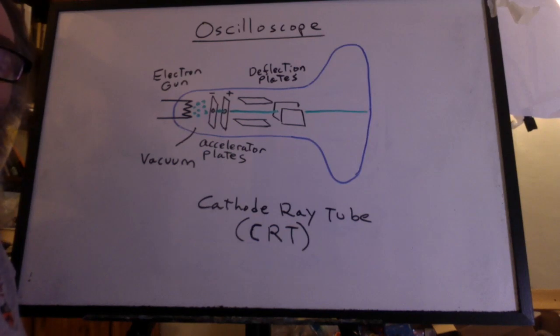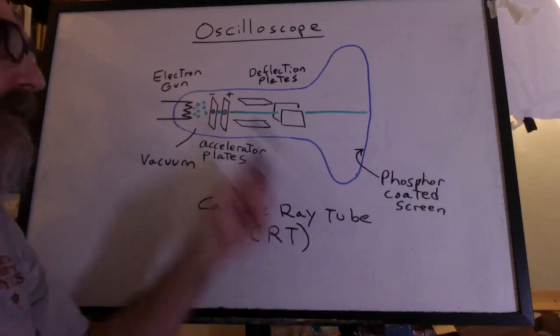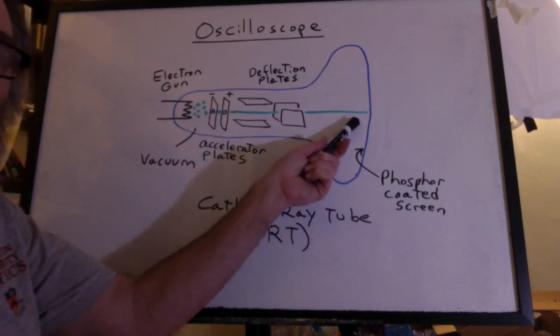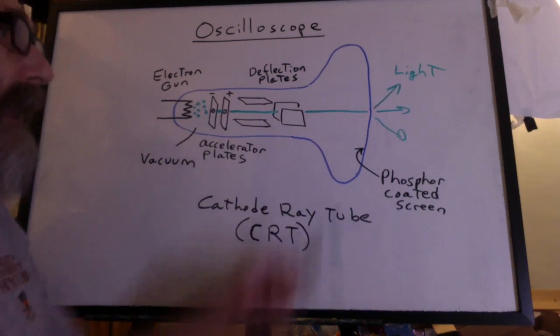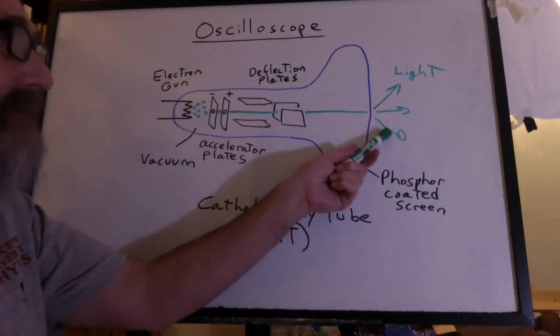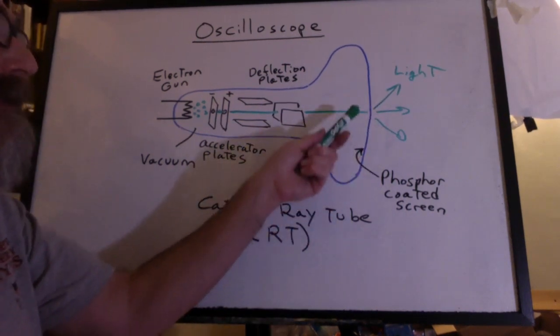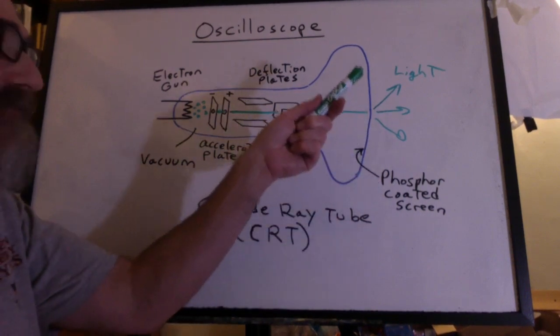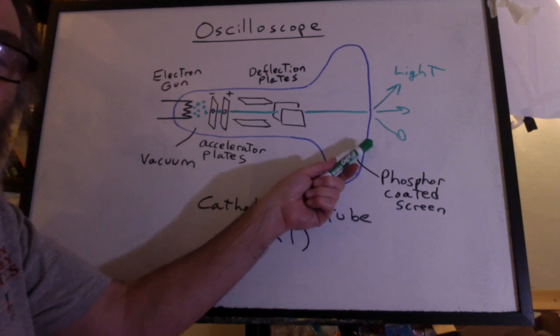Then the beam passes past the deflection plates. When the beam strikes the inside of the glass, there's a phosphor coating on it, which absorbs the energy from the electrons and gives off light. This light is not the electrons. It's the light being given off when the phosphor gets excited and the electrons jump down from the higher energy level.